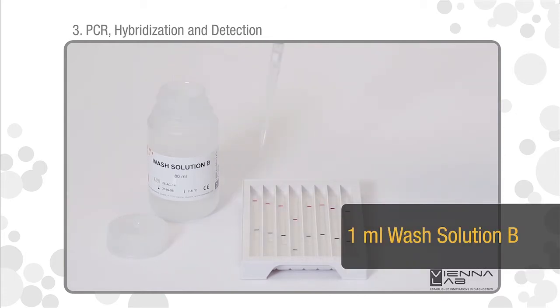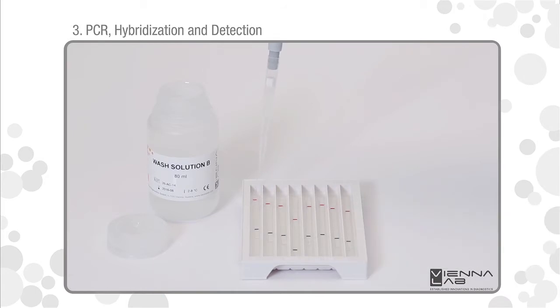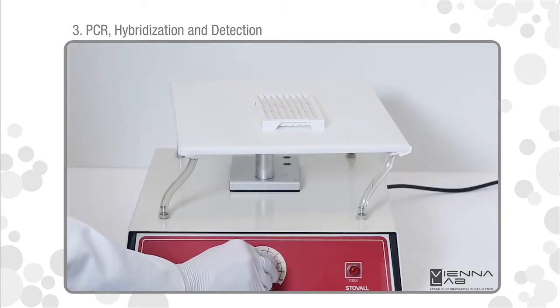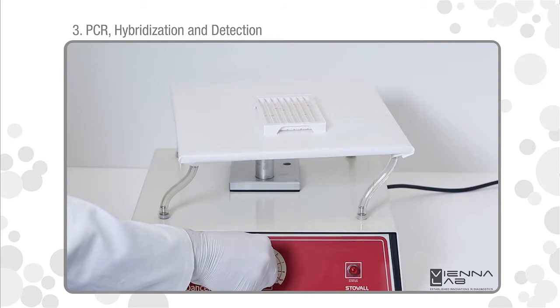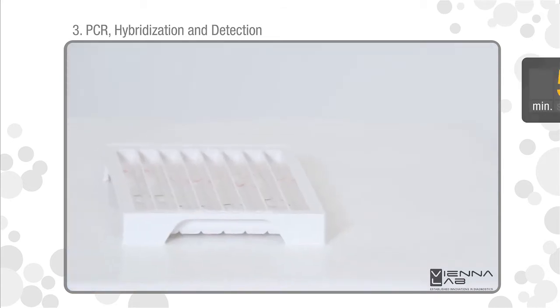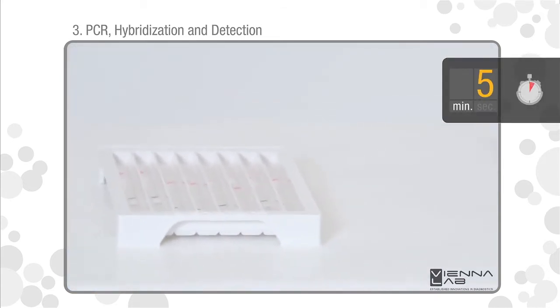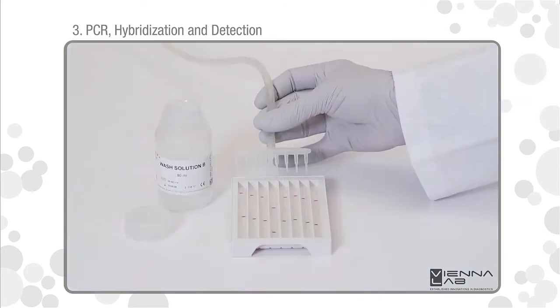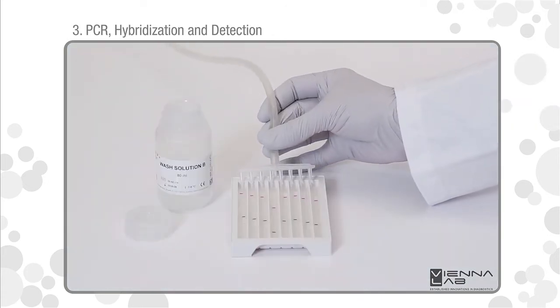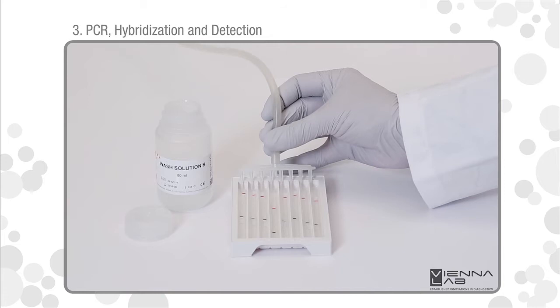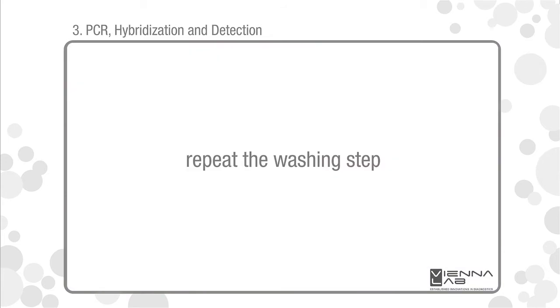Add one milliliter wash solution B. Incubate for 5 minutes at room temperature on a rocker or orbital shaker. Remove liquids by vacuum aspiration. Repeat the washing step.